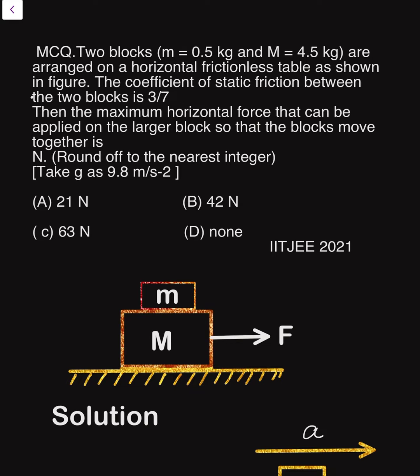First of all, the question: two blocks, 0.5 kg and 4.5 kg, are arranged on a horizontal frictionless table as shown in the figure. The coefficient of static friction between the two blocks is 3/7.